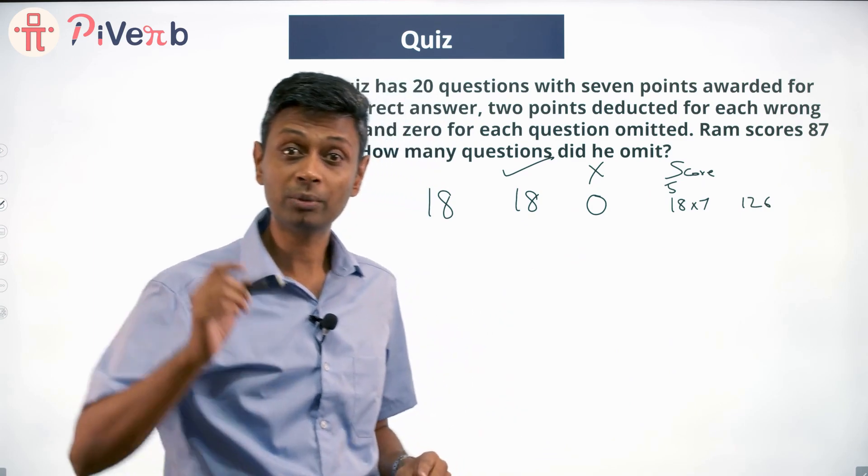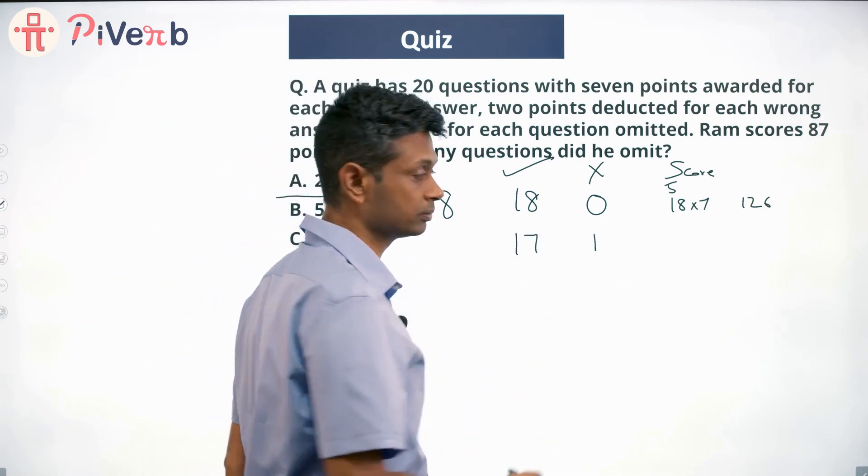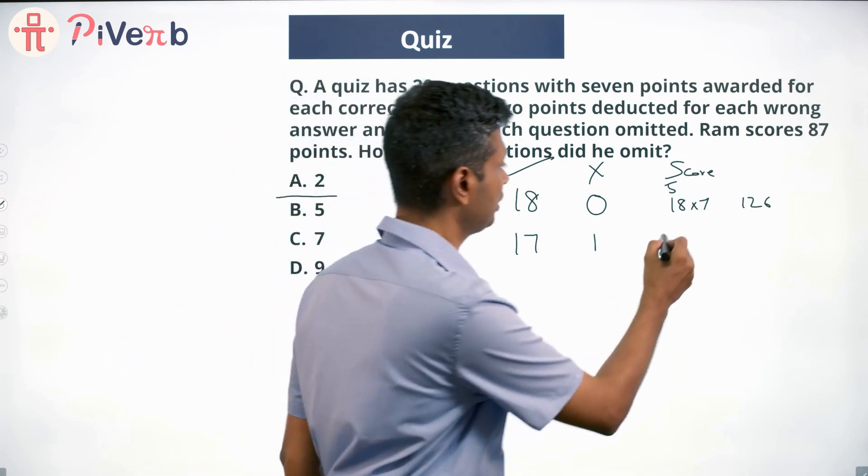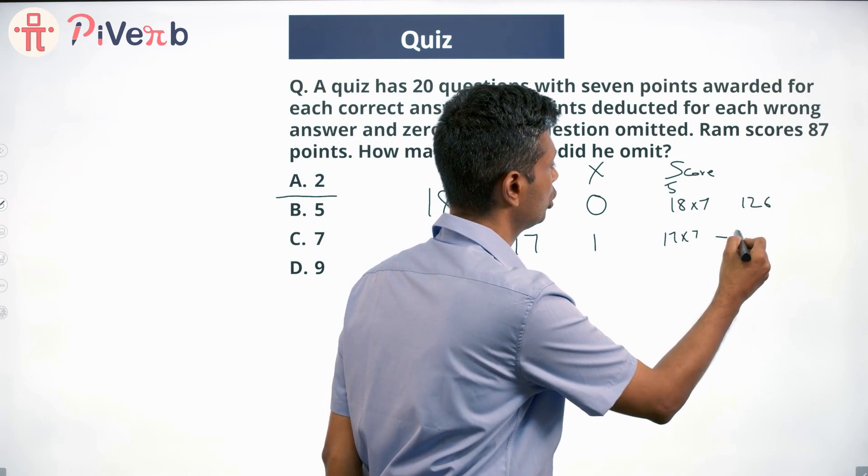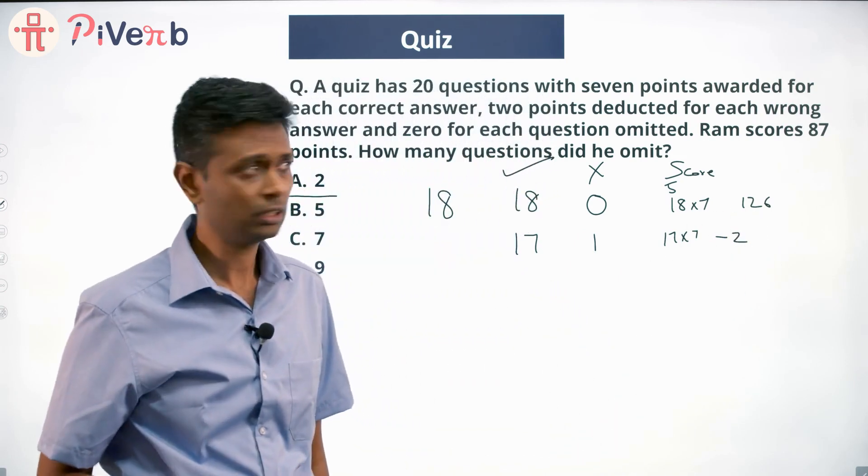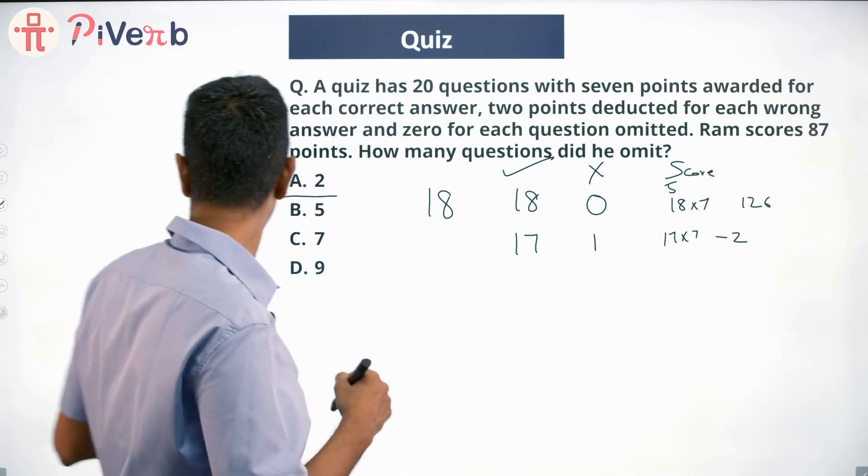But having attempted 18 questions, he could have got 17 right and one wrong. This will be 17 into 7 minus 2, because he gets two points deducted for each wrong answer. However, I'm not going to think of it as 17 into 7 minus 2.